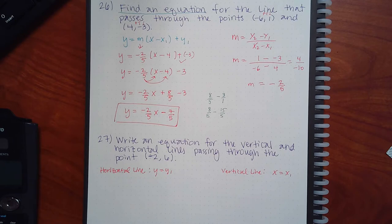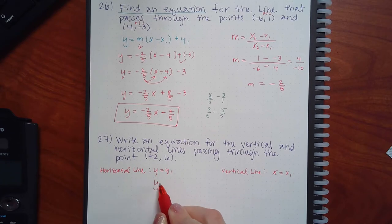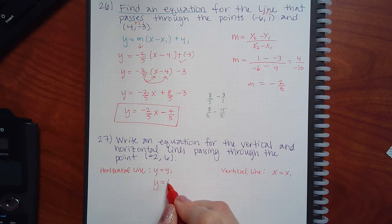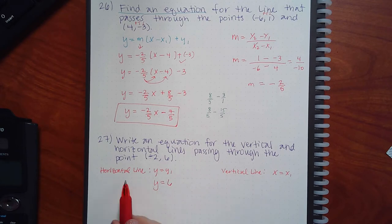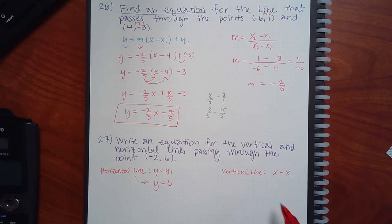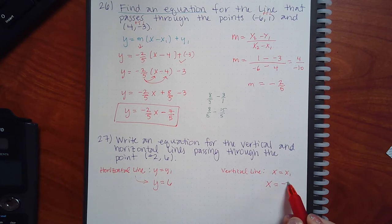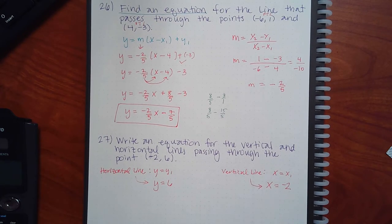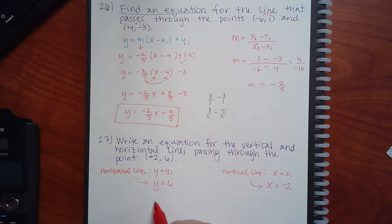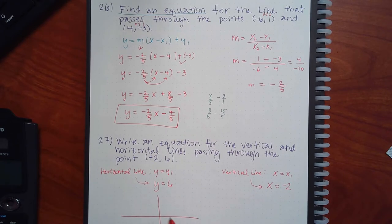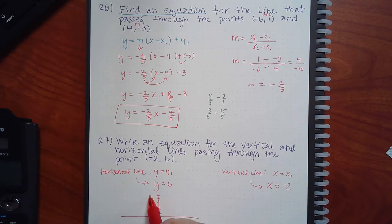We do have the coordinates — x1 and y1. What is the y-coordinate for this problem? Six. So this is the horizontal line: y = 6. And what is the x-coordinate? Negative two. So this is the equation of the vertical line: x = negative 2. There's not really a whole lot to do — that's the equation.